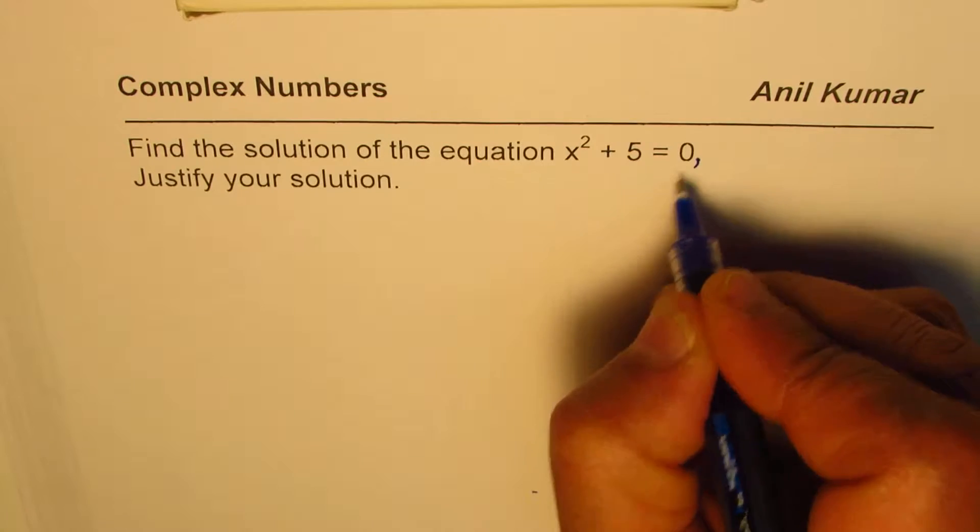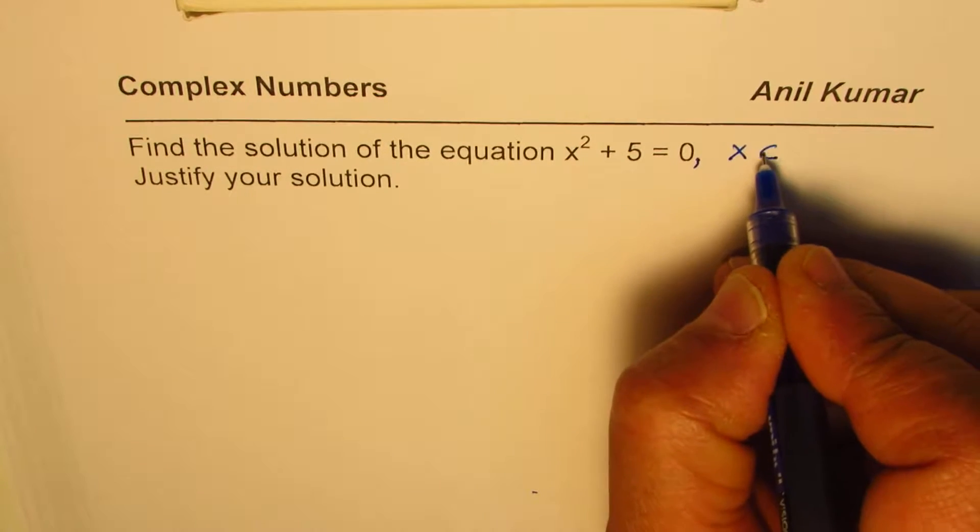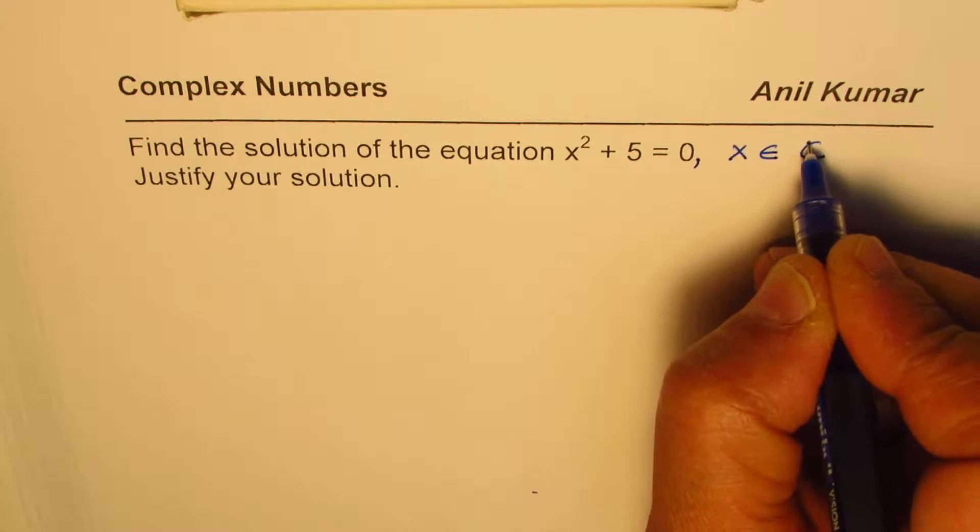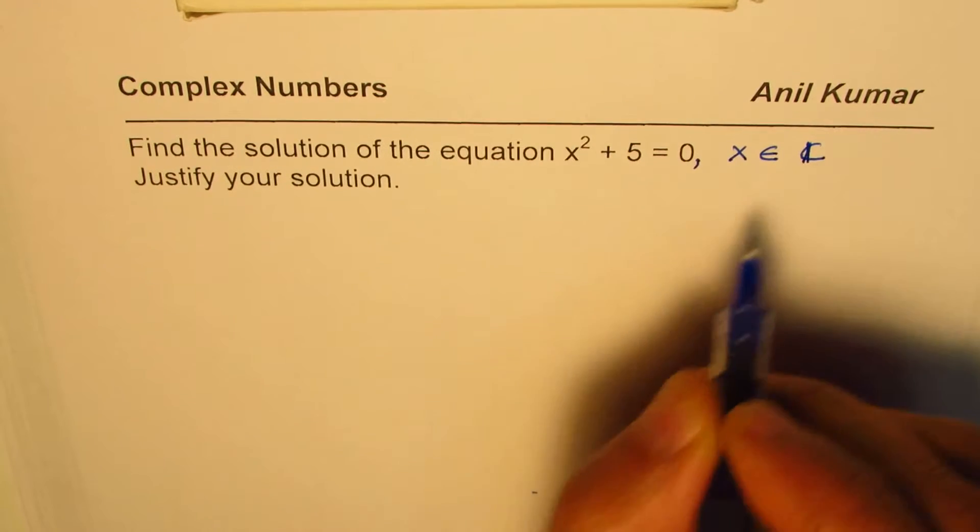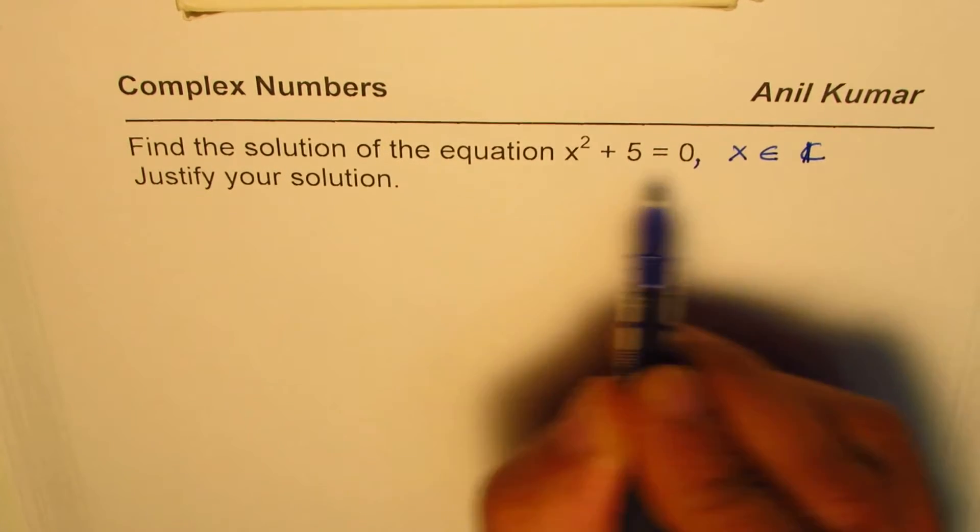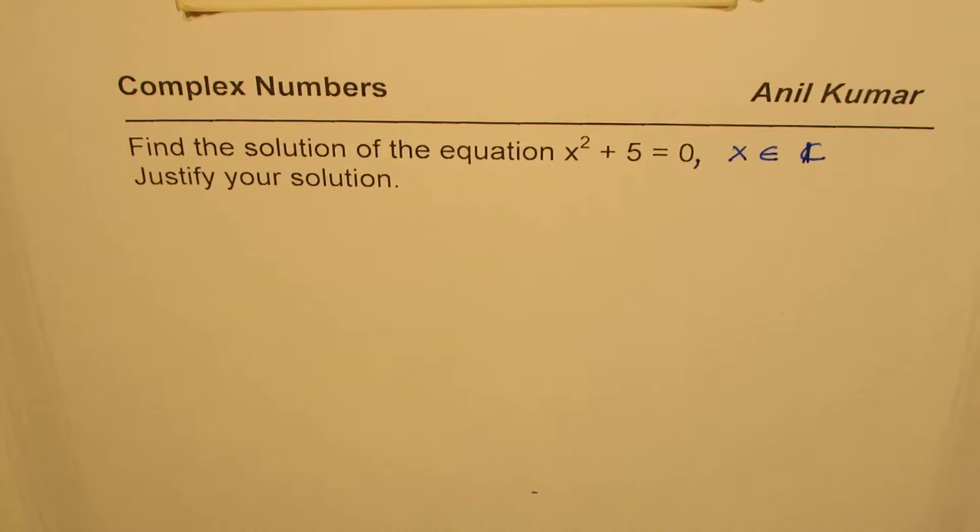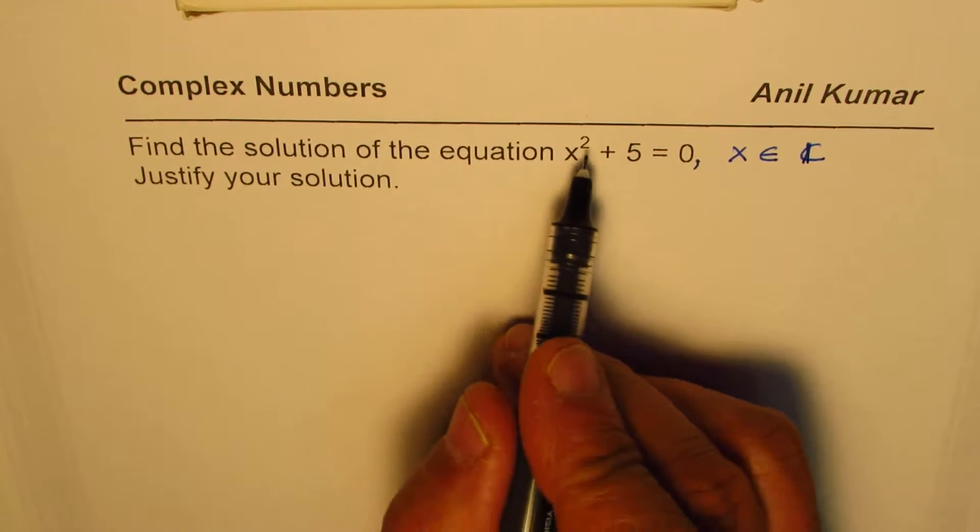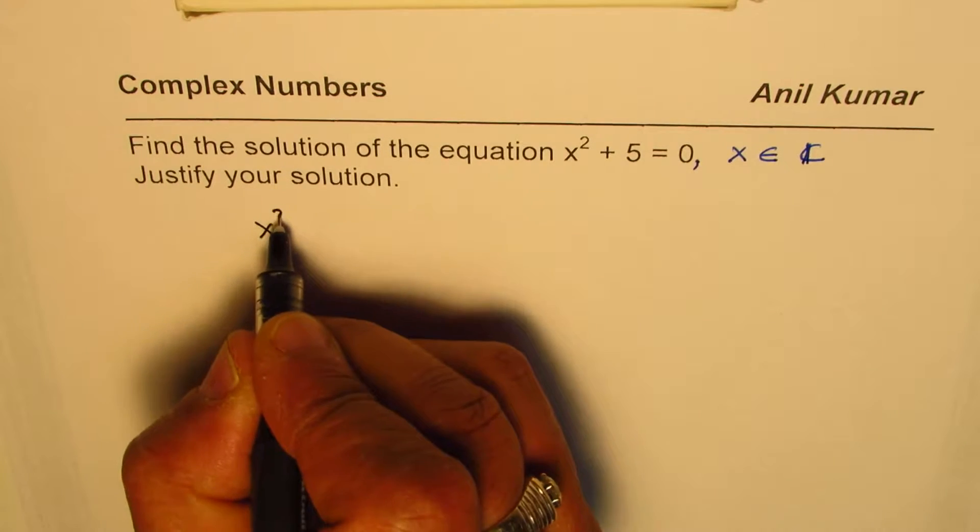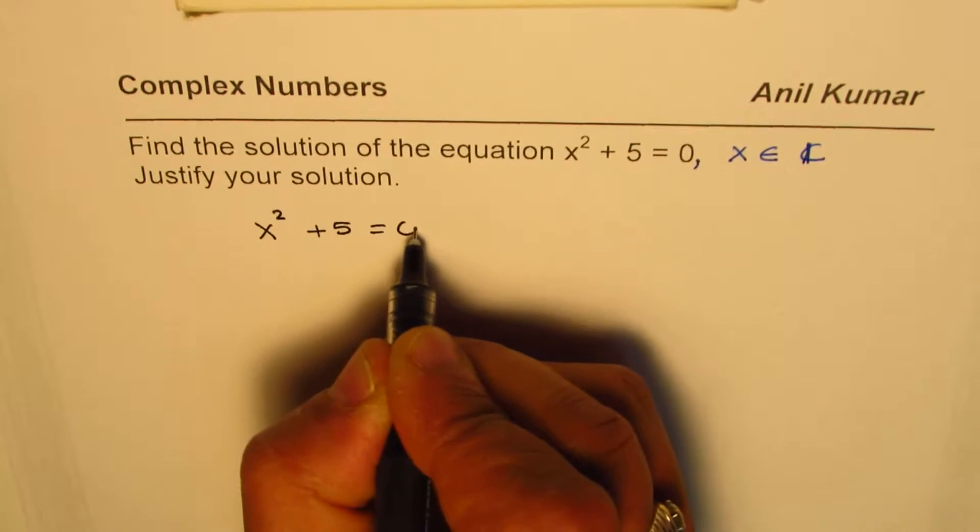Now, we are working in the domain of complex numbers. Let us say x belongs to the set of complex numbers. That is the set of complex numbers in which we will find the given solution. The question here is x² + 5 = 0.